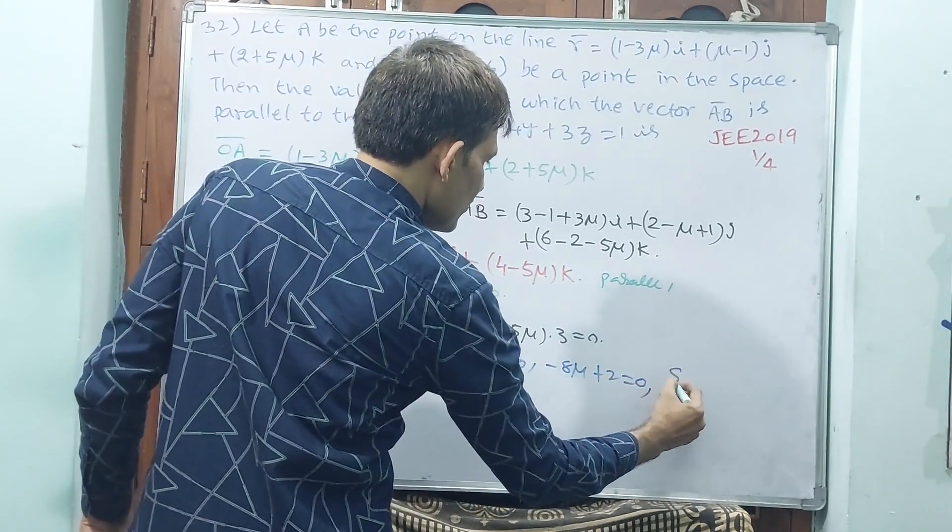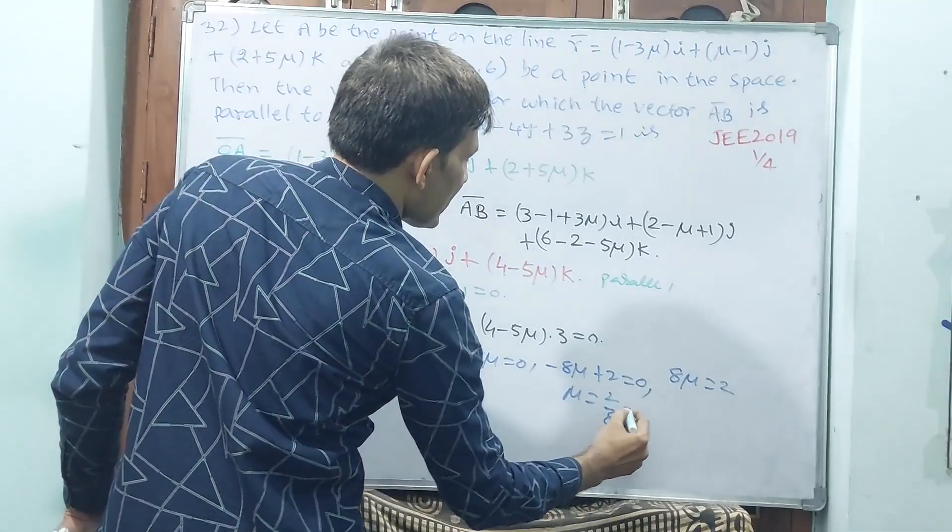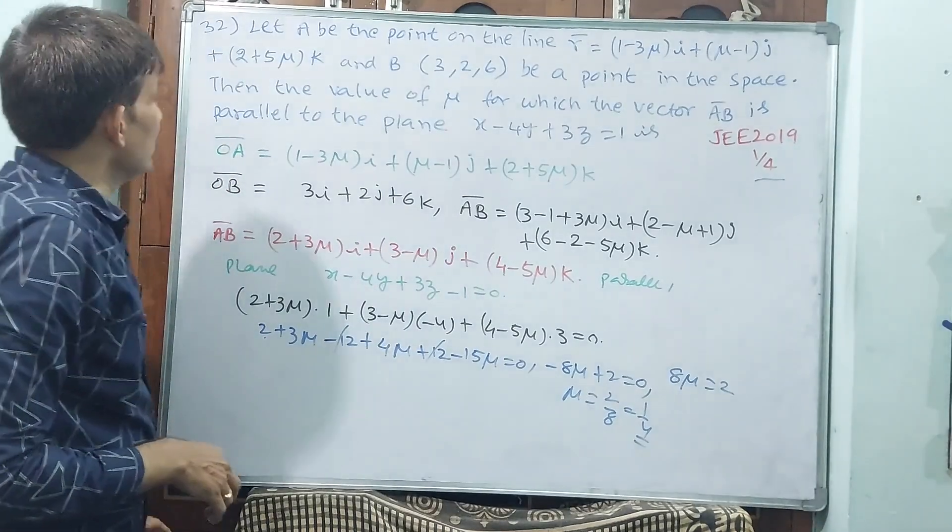That means 8μ is equal to 2. μ is equal to 2 by 8, or 1 by 4. Okay, this will be your answer.